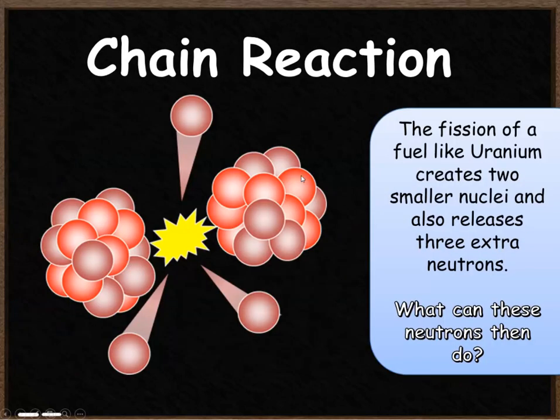The fission of a fuel like uranium creates these two smaller nuclei but it also creates three extra neutrons. We need to think about what these neutrons can now go on to do. They can go and take part in something called a chain reaction.